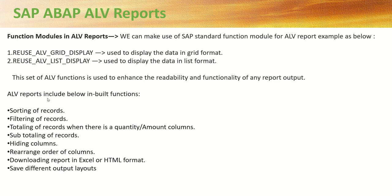When using ALV reports, we get inbuilt functions like sorting of records, filtering of records, totaling of records when there are quantity or amount columns, subtotaling, hiding columns, rearranging the sequence of columns, downloading the report in Excel or HTML formats, and saving different layouts of the output. Those are the common features available in SAP ALV reports.